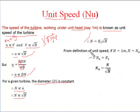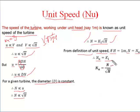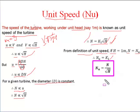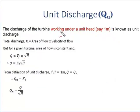By eliminating the proportionality constant, we get N = K₁·√H. From the definition of unit speed, if H = 1 meter then speed equals N_u, the unit speed. Substituting, N_u = K₁, and putting this back into the equation, we get N_u = N / √H. This equation is known as the unit speed of the turbine.